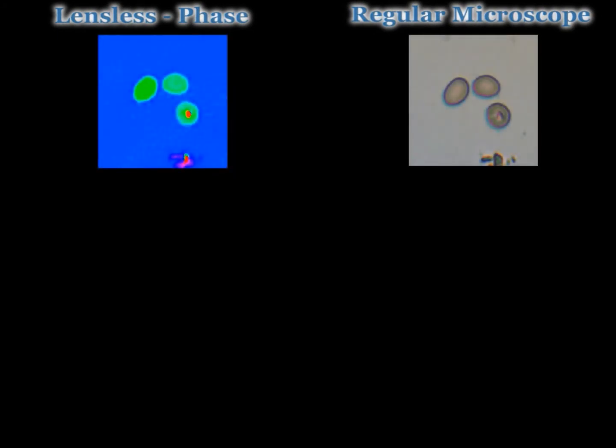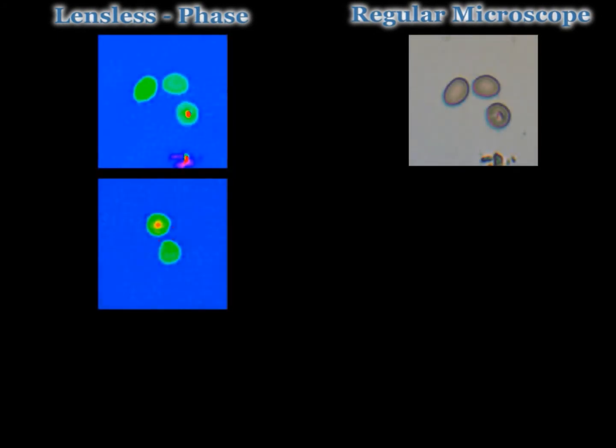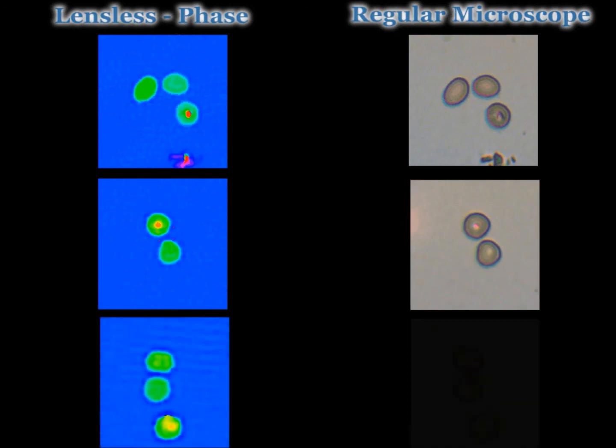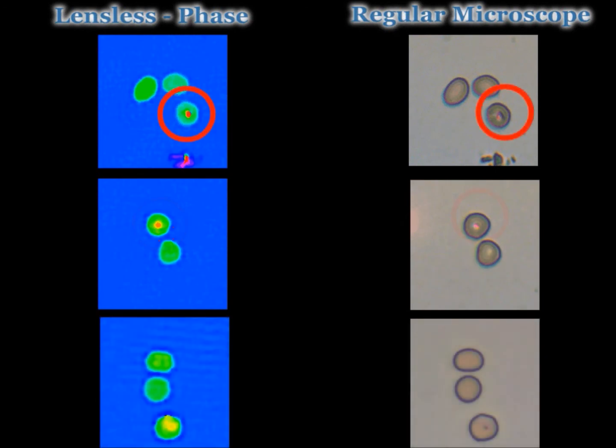An example of a real-world application for our device would be malaria diagnostics in remote locations. To show the potential of this device, we've imaged malaria parasites cultured in blood. As you can see here, we can distinguish the infected blood cells from the healthy ones.